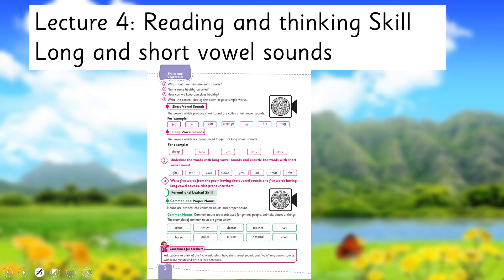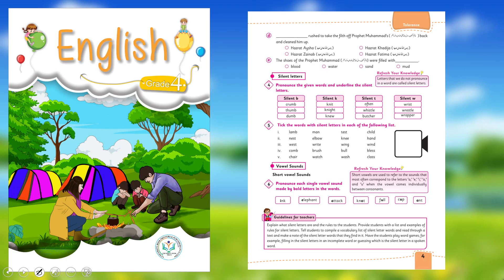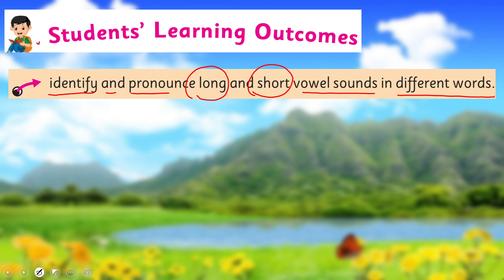My dear children, today under the title of Reading and Thinking Skills, we are going to learn about long and short vowel sounds. In English for Grade Four, I have already taught you long and short vowel sounds. I hope you remember — if not, you may watch that video lecture again. Today we are going to learn further to identify and pronounce long and short vowel sounds in different words. This is our today's SLO.